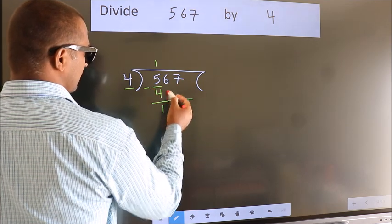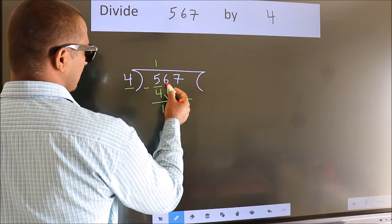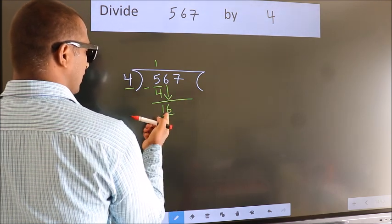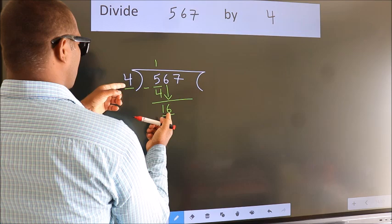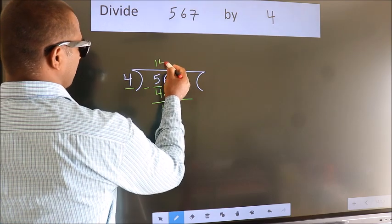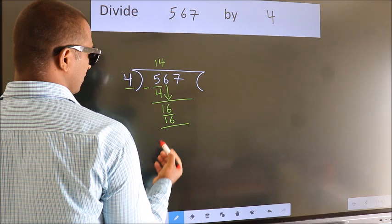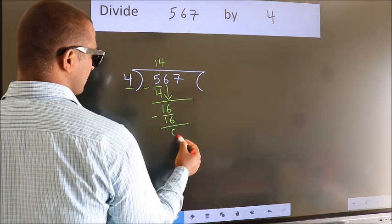After this, bring down the beside number. So 6 down. So 16. When do we get 16? In 4 table. 4 4s, 16. Now we subtract. We get 0.